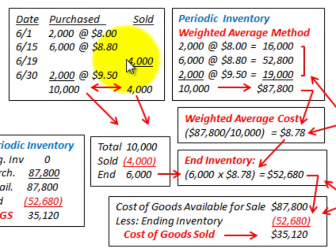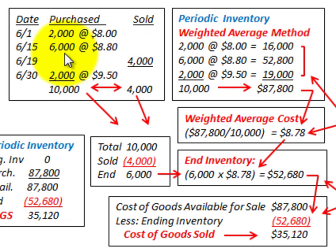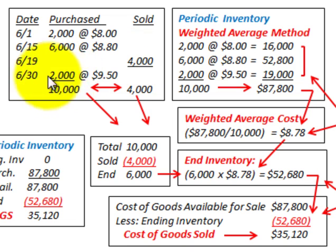Let's look at our example of how we calculate the weighted average cost of inventory. We'll have specific dates with specific quantities purchased at specific unit prices, and we'll have several purchases. After those purchases, we'll have a sale — a distribution from our inventory. Then we'll have another purchase at the end, all at different unit prices.